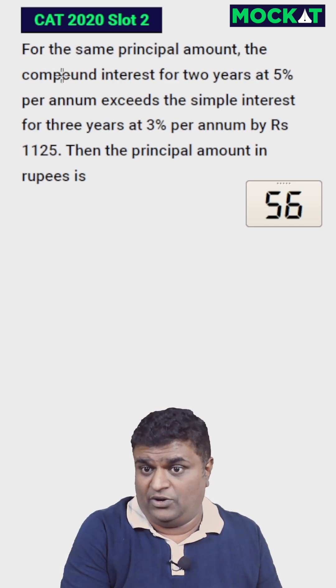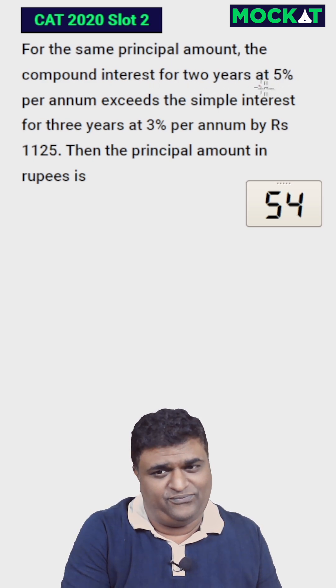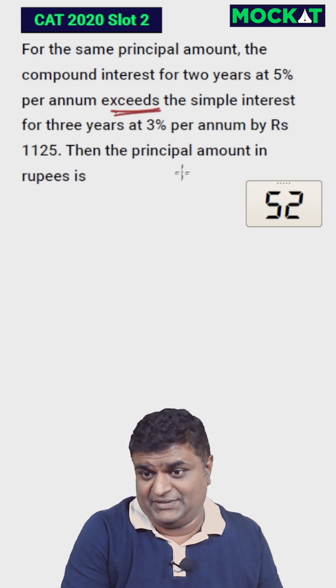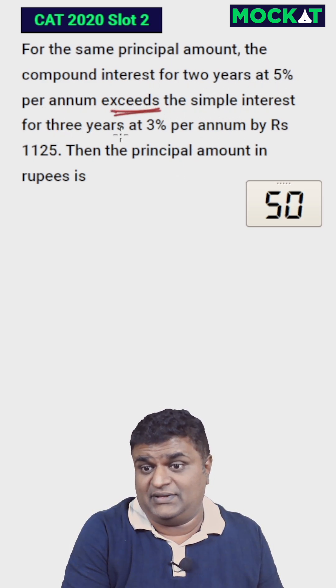For the same principal amount, the compound interest for 2 years at 5% per annum is greater than simple interest for 3 years at 3% per annum.